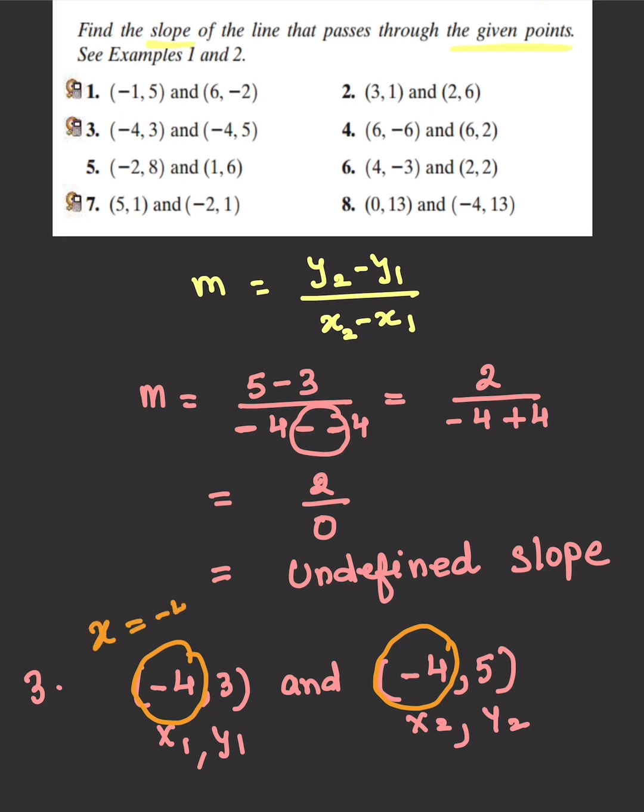And when the slope is undefined, then the equations are like this: x equals a number. In this case it would be x equals -4, and the graph of such equations is a line which is parallel to the y-axis.